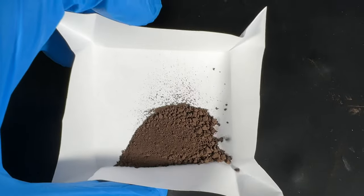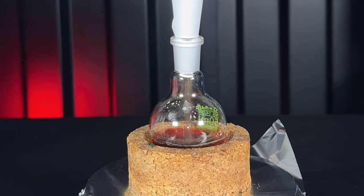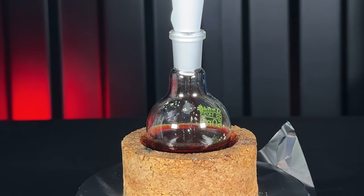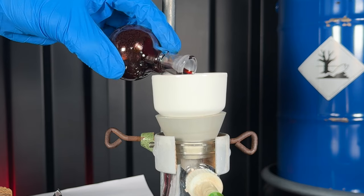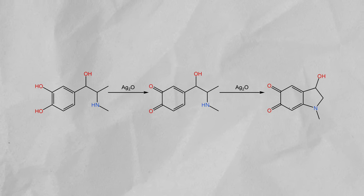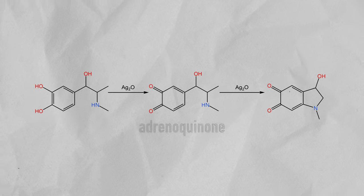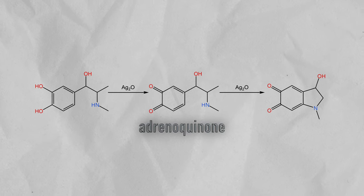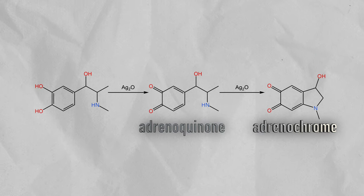I added the dirt to the flask and if you look closely, you can see that the solution immediately turned red. Adrenochrome actually looks like blood. Maybe you can also do the reverse and synthesize tortured children from this substance. The reaction taking place is the following: Adrenochrome first gets oxidized to adrenoquinone and then gets oxidized a second time to form the final product, adrenochrome.